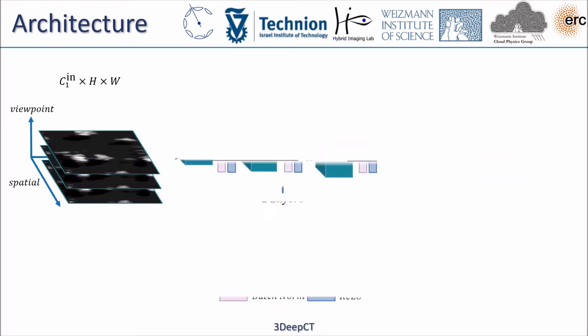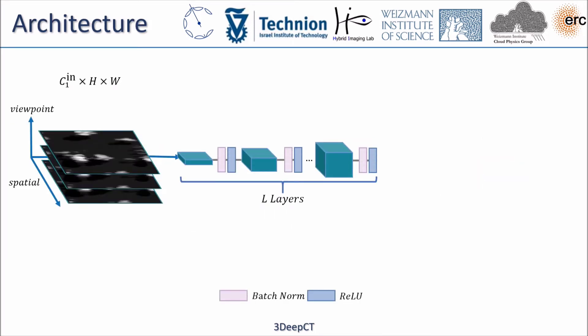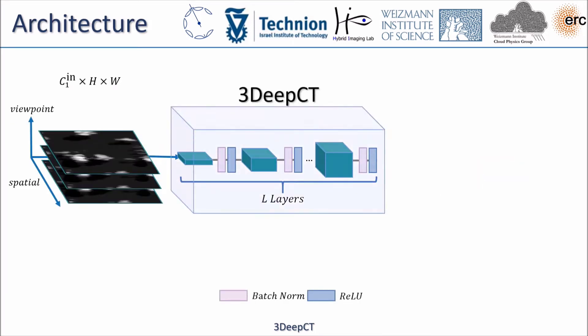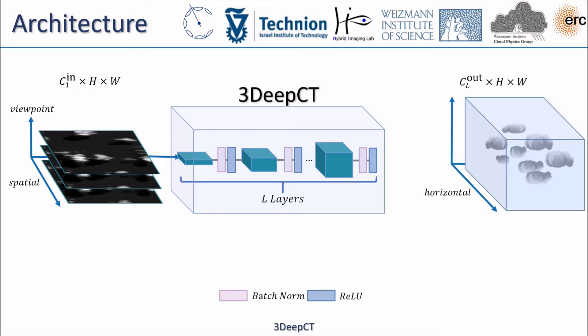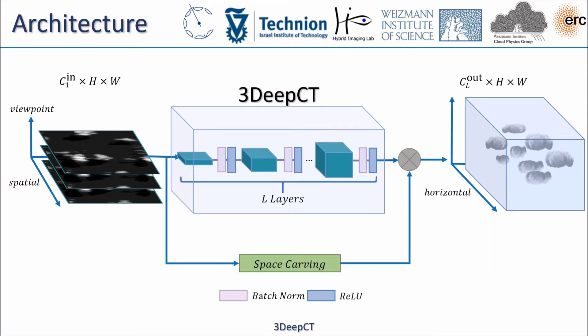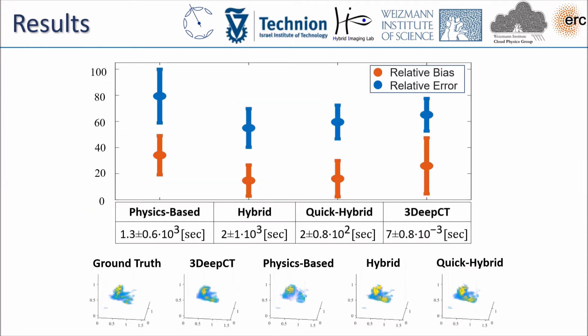3DEEPCT involves a series of two-dimensional convolutional layers with batch normalization, each followed by a ReLU activation. For improved recovery results, we use a space-carving mask and finally produce the 3D recovery of the cloud.